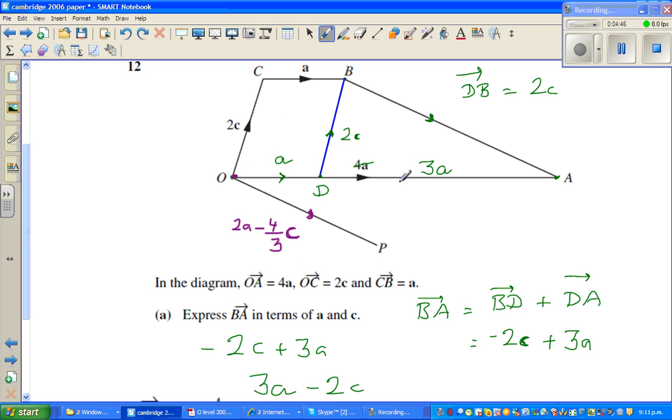So you go from here to here first and then you go from here to here, so this is your 4/3 c or minus 4/3 c, this vector is. So let me draw this, so what you're saying is, this is your vector 2a and then you go a distance of minus 4/3 c.